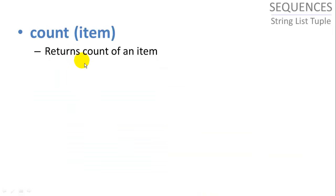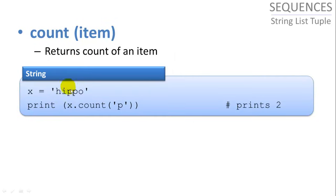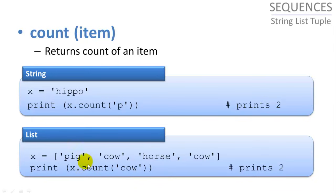Count of item returns the count of a specific item in the sequence. So here we're looking for the count, x dot count of p will tell us there are two p's in hippo. And x dot count of cow will tell us how many times the word cow appears in our list x.